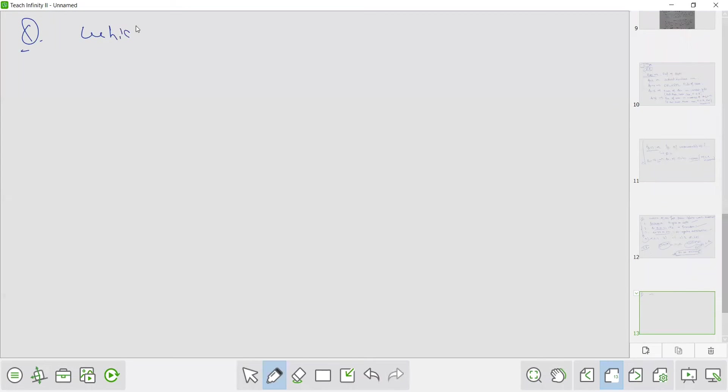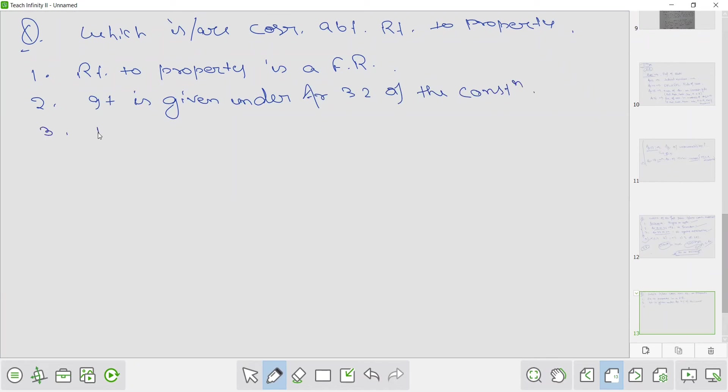Which is or are correct about right to property? First, right to property is a fundamental right. It is given under Article 32 of the constitution and it was added by 44th Amendment Act of 1978. Statement 1, 3 only. Option B, 2 only. Option C, 1 only. Option D, none.